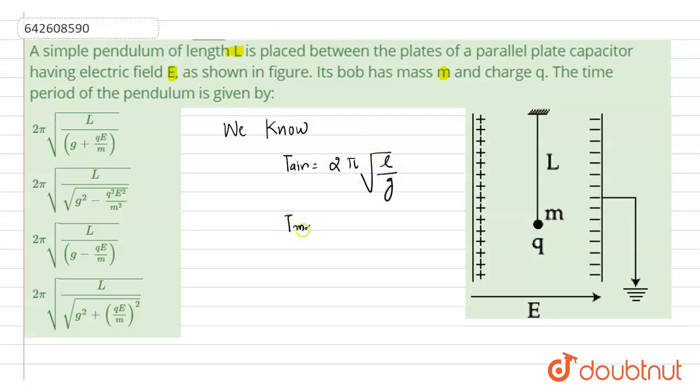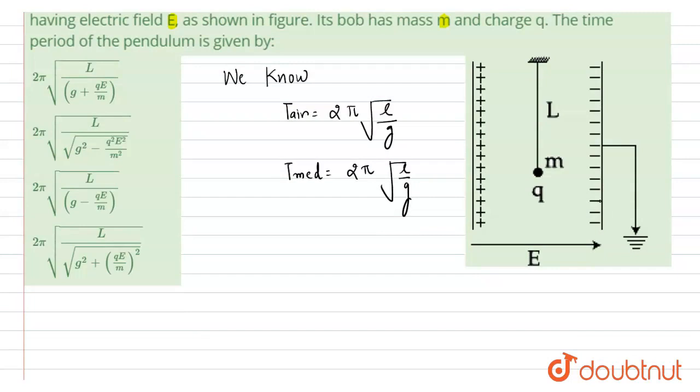But in case of any medium, we will use formula 2π√(L/g effective). Now that simple pendulum is under electric field. So if it has positive charge, then it will move towards this.